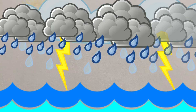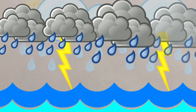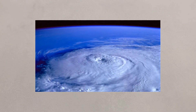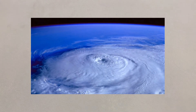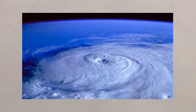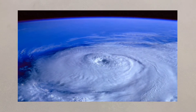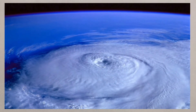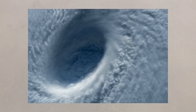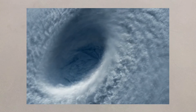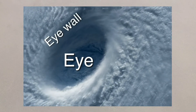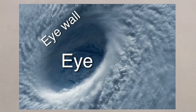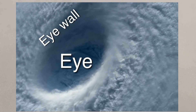Several thunderstorms may join together, creating a giant rotating storm, and when the wind speeds exceed 74 miles per hour, the storm can be categorised as a tropical storm. The storm will continue to grow as it travels across warm water and forms an eye at its centre. This is where the air will descend, creating calm conditions, whereas the eye wall contains the strongest winds and heaviest rainfall.